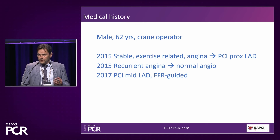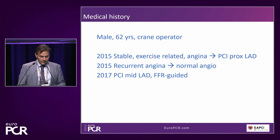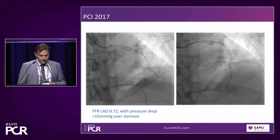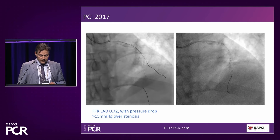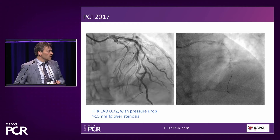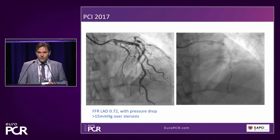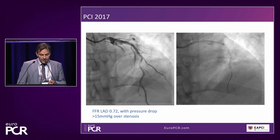Two years later, he received stenting of the mid-LAD, performed in Eindhoven in the lab of Nico Pijls — the temple of FFR — and this was an FFR-guided PCI. The FFR was clearly positive at 0.72, and the largest pressure drop was over the stenosis in the mid-LAD. They performed guideliner-assisted stenting of the mid-LAD with a very nice angiographic result. But again, one year later, he returned with still severe angina, a positive bicycle test, and was referred back to the cath lab.